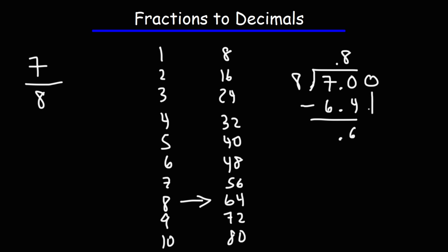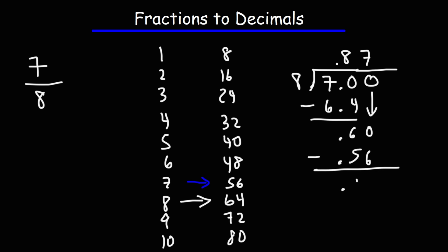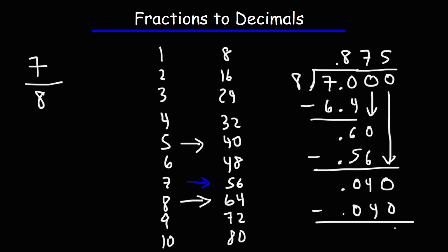Now 8 doesn't go into 6, so we need to bring down a 0. How many times does 8 go into 60? The highest multiple of 8 below 60 is 56, and 8 goes into 60 seven times. 8 times 7 is 56. 60 minus 56 is 4. So now we need to bring another 0 down and treat this as if it's 40. We know 8 goes into 40 exactly 5 times, and we get a remainder of 0. So 7 over 8 is exactly 0.875.